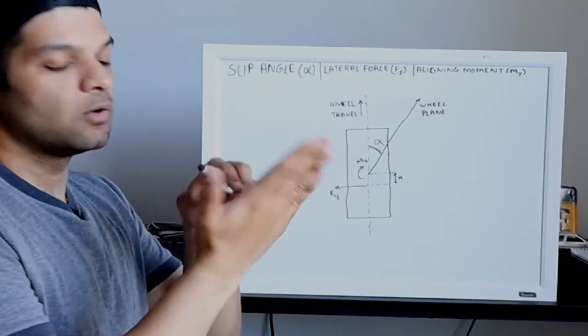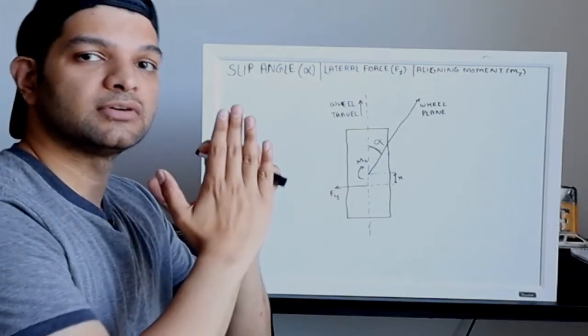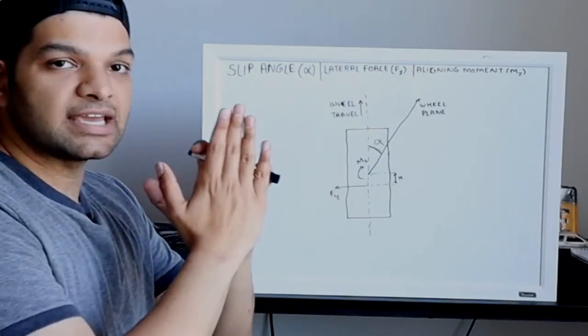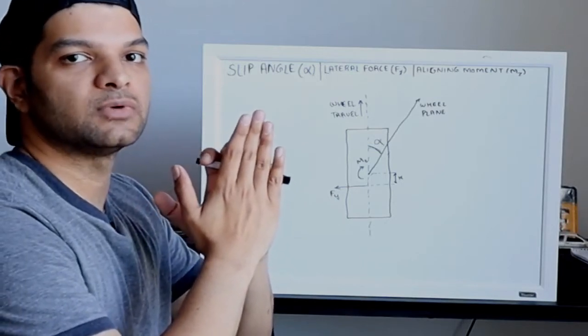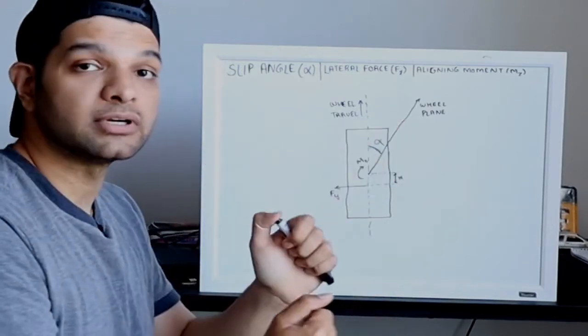Whereas the rest of the tire will move towards the right hand side as shown in this figure. So because of this deformation in the tire, a force is generated.